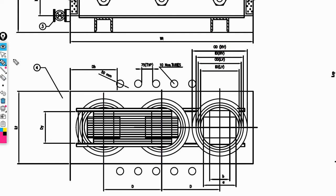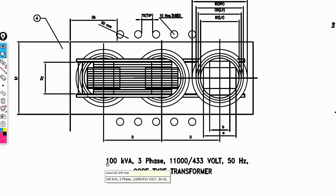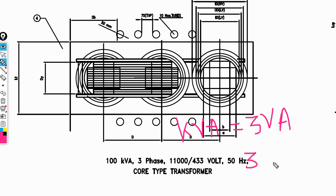The rating of the transformer is very important — this is a 100 kVA transformer. The kVA rating: kVA = V × I for a single-phase transformer. For a three-phase transformer, kVA = 3 × VA × 10³.